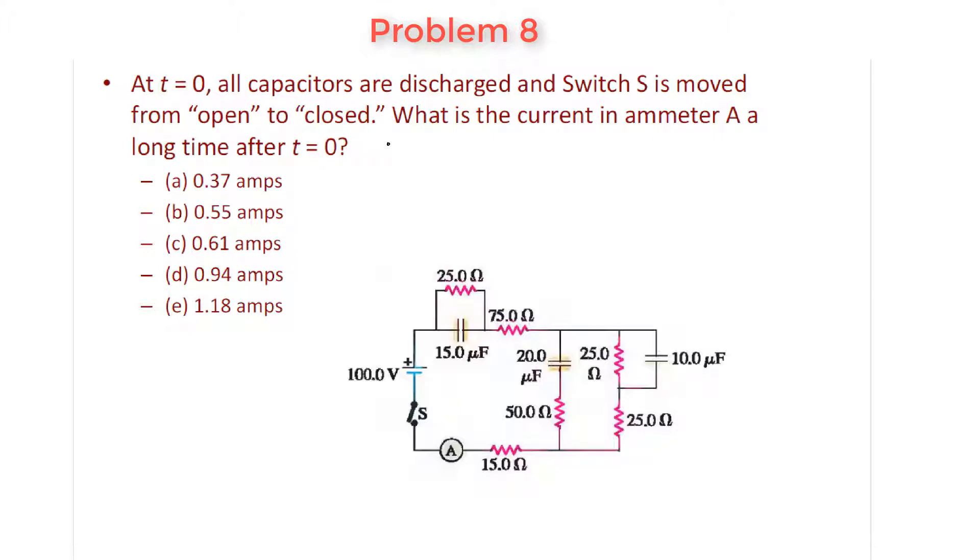Alright, here's problem eight. T equals zero again, the same circuit as the previous problem. All these capacitors are discharged, so there's no charge, there's no voltage across them. And then you close the switch down here.